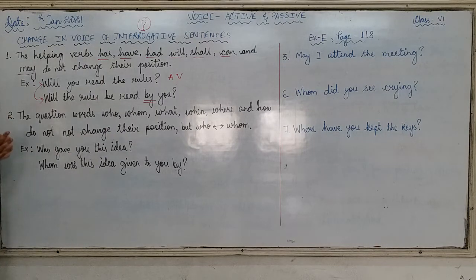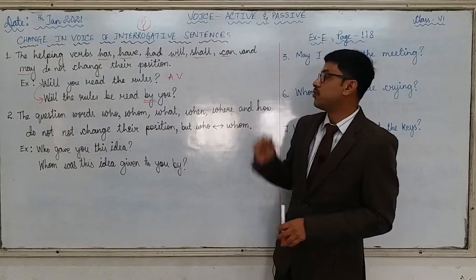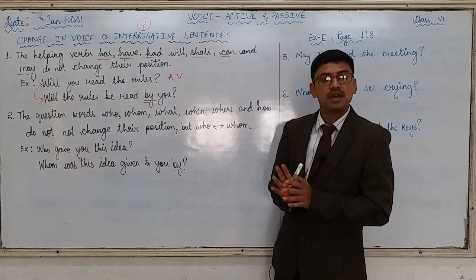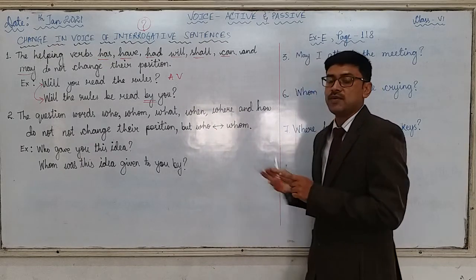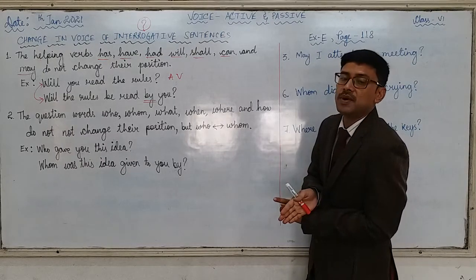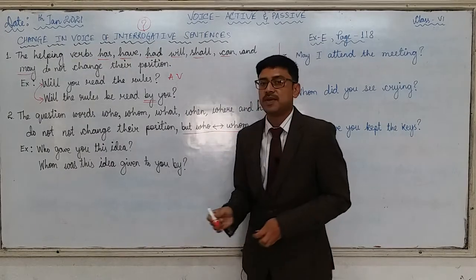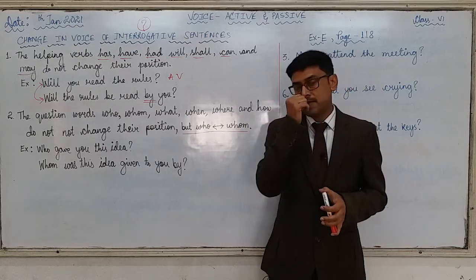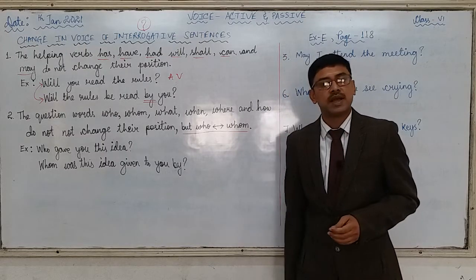Point number 2: The question words — who, whom, what, when, where, and how — do not change their position. Like the helping verb, the question words also remain in the same place. But 'who' changes to 'whom' when we change from active to passive, or 'whom' changes to 'who' when we change from active to passive. This is one thing to keep in mind; otherwise, the placement of the helping verb and the WH words remains the same.